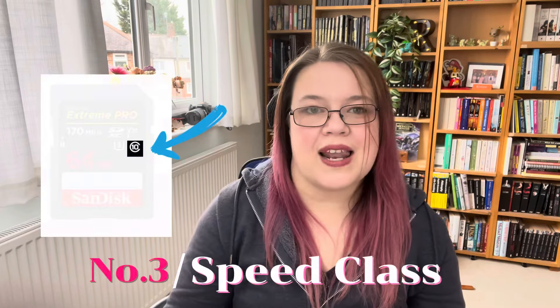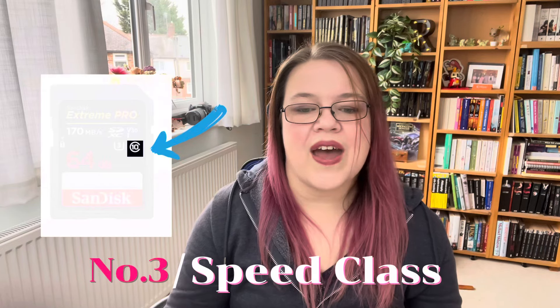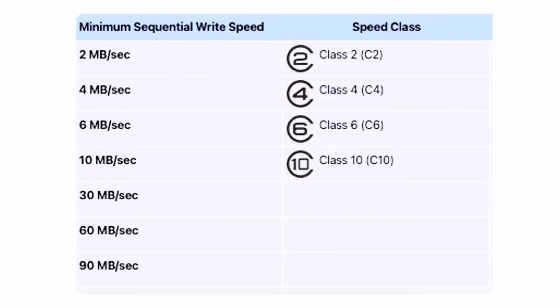Then you've got your Speed Class: Class 2, 4, 6, and 10. These are quite literally your minimum write speeds per second. So if it's a Class 2, it will write at a minimum of 2 megabytes per second. So again, capacity and speed — you've got to think about these things.